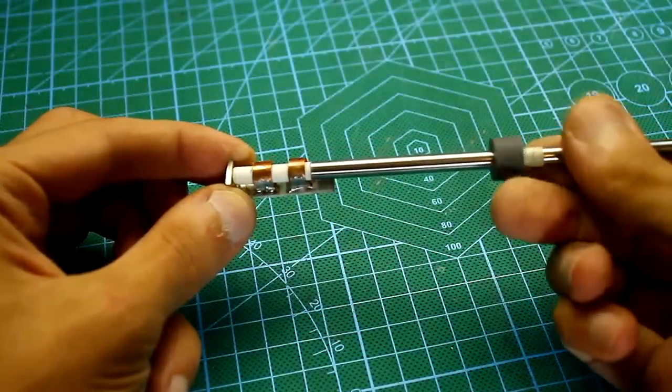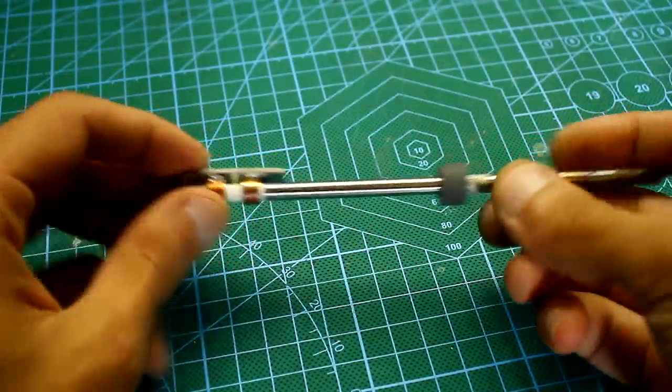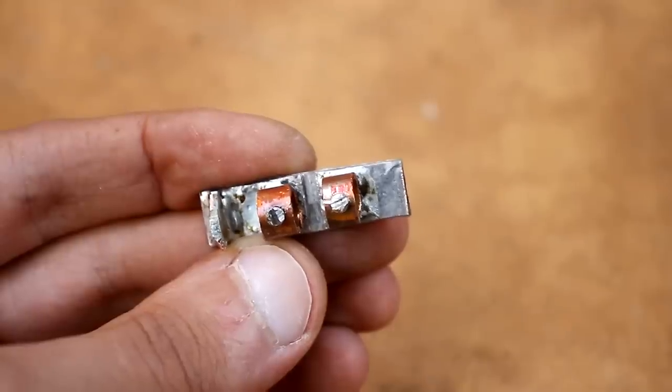If you insert a T12 tip here, then the contacts will be right in the sleeves. Of course, at first it is necessary to remove the foil between the places where sleeves will solder, having received two separate sections.